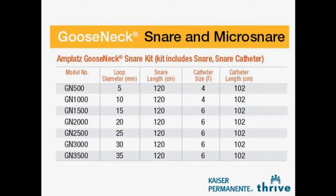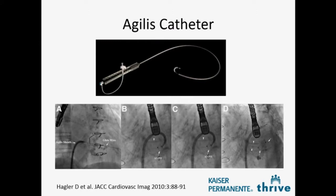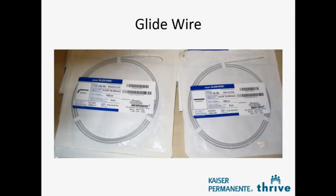The gooseneck snare comes in various sizes and lengths. The Agilis catheter is becoming a very common catheter used in structural heart procedures. You can essentially curve it; it comes in various sizes, and you can stock your lab with different diameters of the arch. It can really reach into all positions and get you where you want to be.